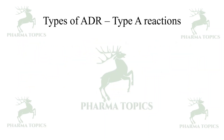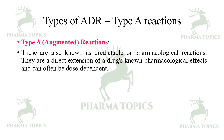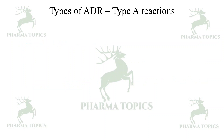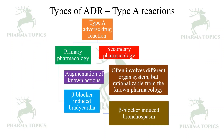First, let us see Type A reactions. Type A, or augmented reactions, are also known as predictable or pharmacological reactions. They are a direct extension of the drug's known pharmacological effects and can often be dose dependent. Examples include hypotension caused by beta blockers and hypoglycemia caused by insulin and oral anti-diabetics. These can be prevented by using low doses.